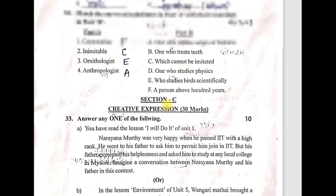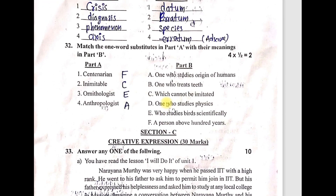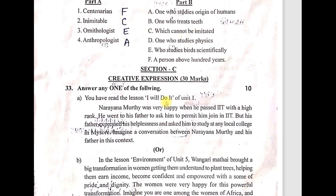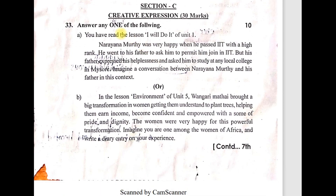Now Section B is complete. Moving to Section C — 30 marks are given here. Question 33 has options A and B — it is from the Narayana Moorthy lesson. Imagine a conversation between Narayana Moorthy and his father. The alternative option B is from the fifth unit — environment.